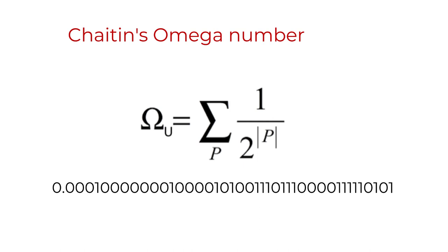The longer the program length p, the smaller its contribution to omega. So the sequence is not only very difficult to calculate for increasing program lengths, but it is also uncomputable, because we know that due to the halting problem, one can never really know which computer program will halt. This is why the omega number is also called the halting probability. From the formula, it can be seen that short computer programs have the greatest weight in the fraction, because the smaller the denominator, the larger the value, and so the shortest computer programs will contribute the most to omega.